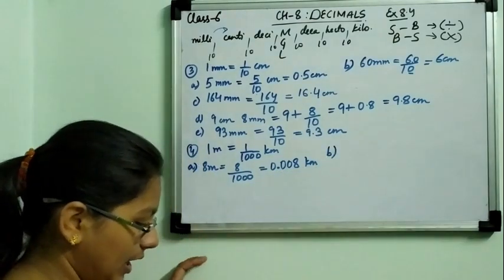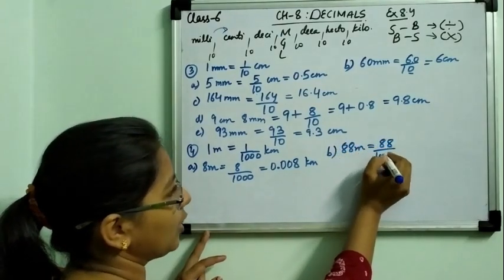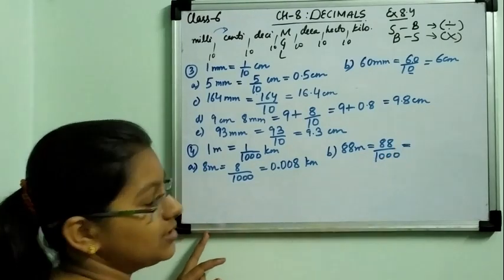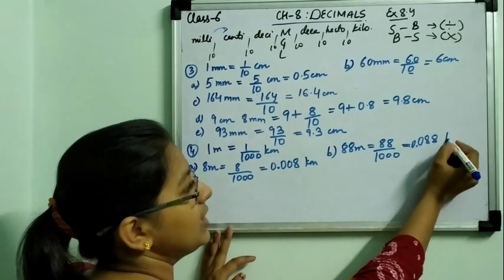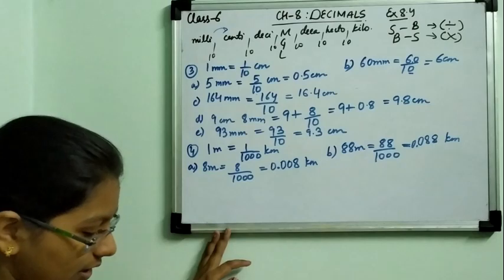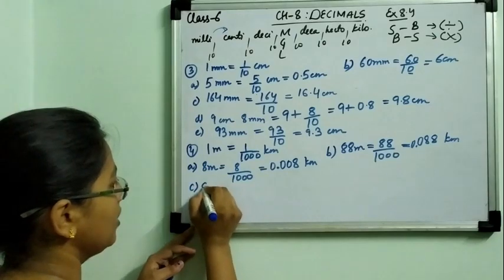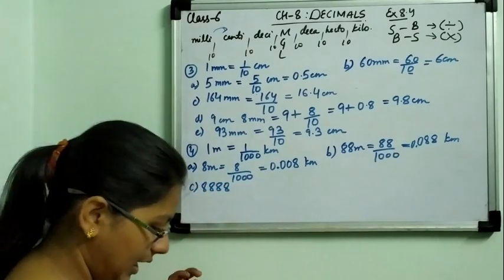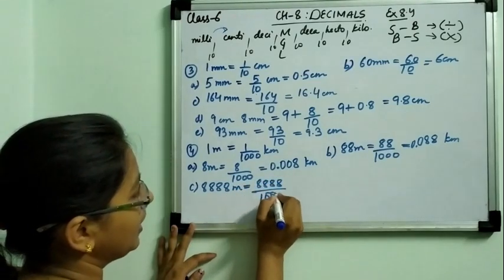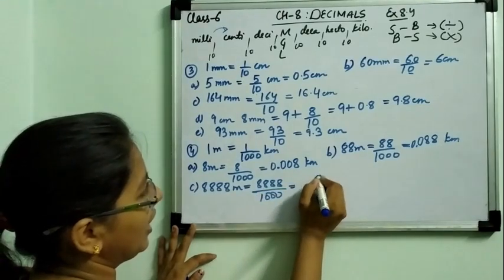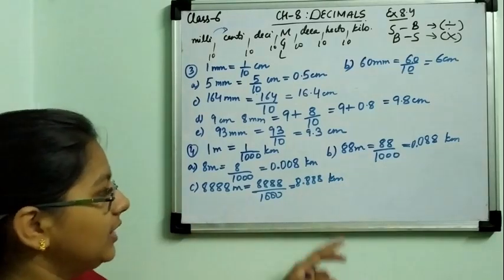In part B it is 88 metre. Same type of question: 88 divided by 1000. Decimal after 3 digits — so that is 0.088 kilometre. In part C, four 8s are given — meaning 8,888 metre. Again dividing by 1000: from the right side after 3 digits, that gives 8.888 kilometre.